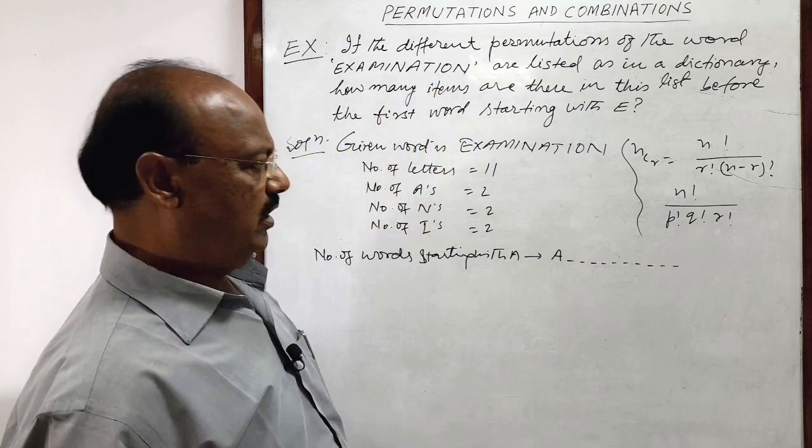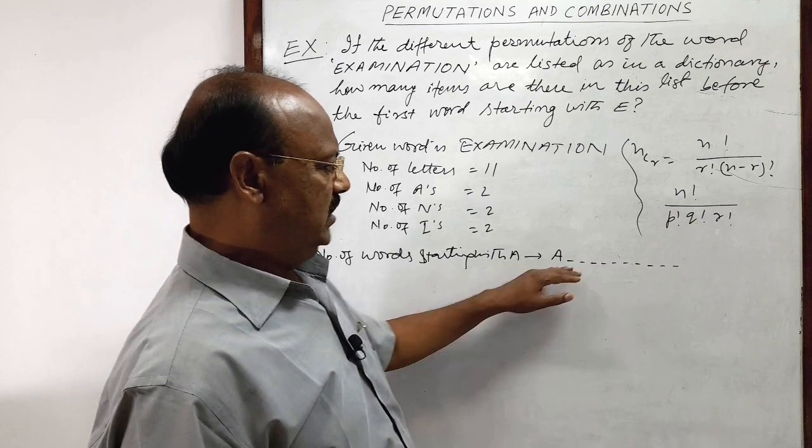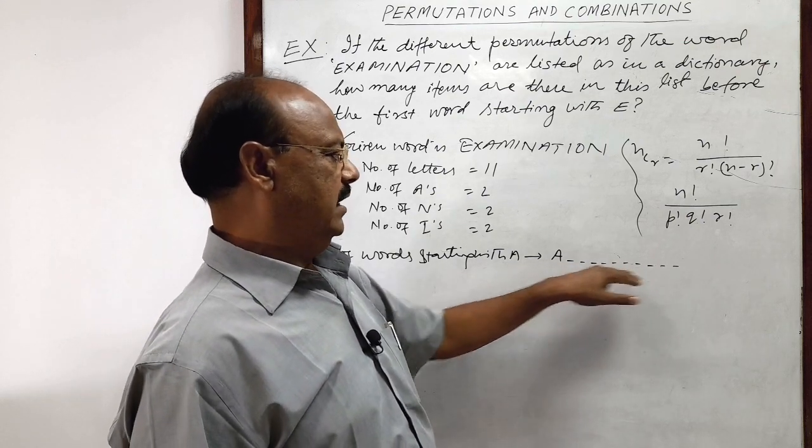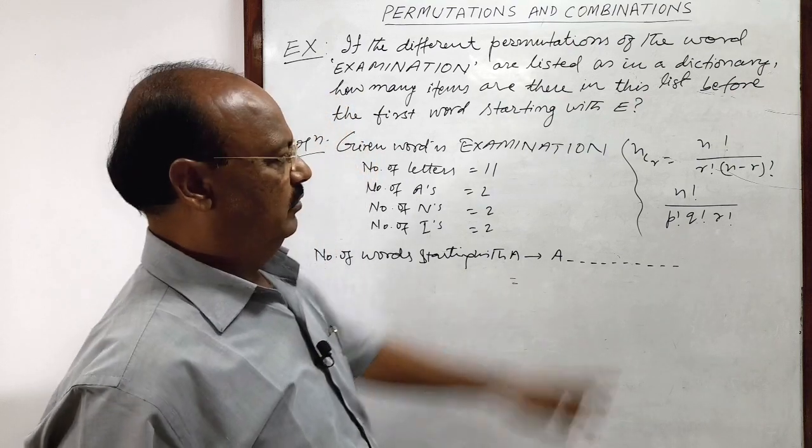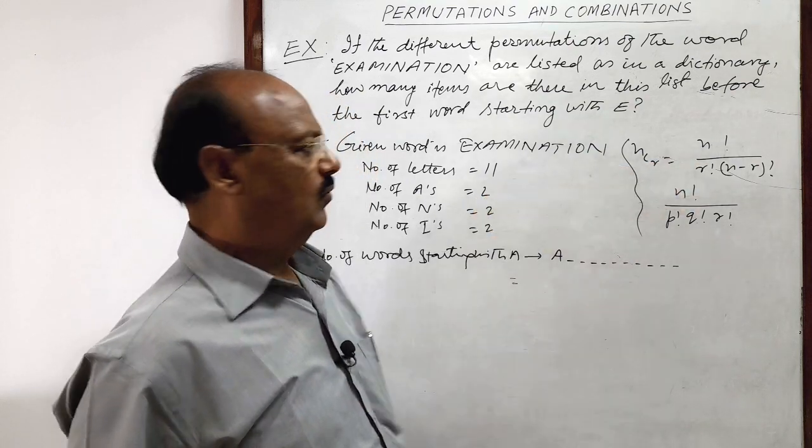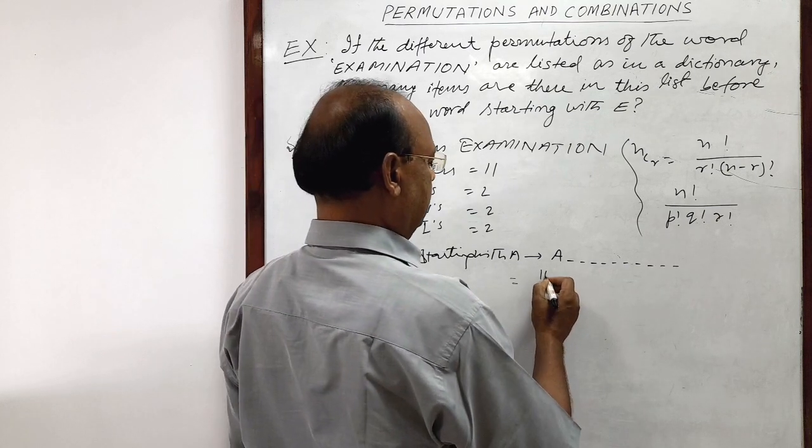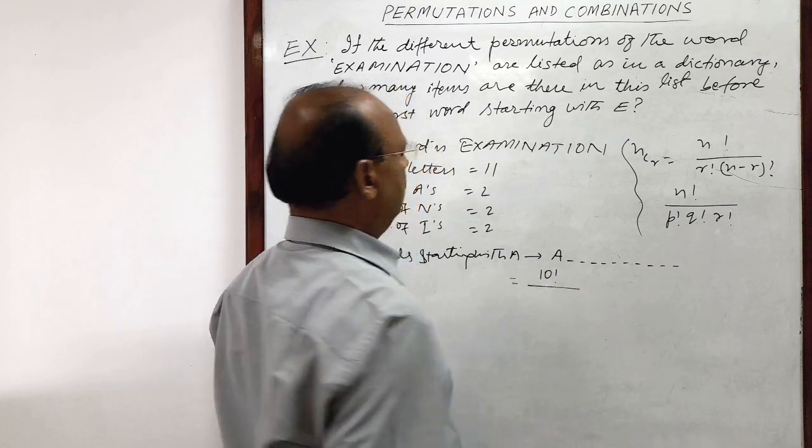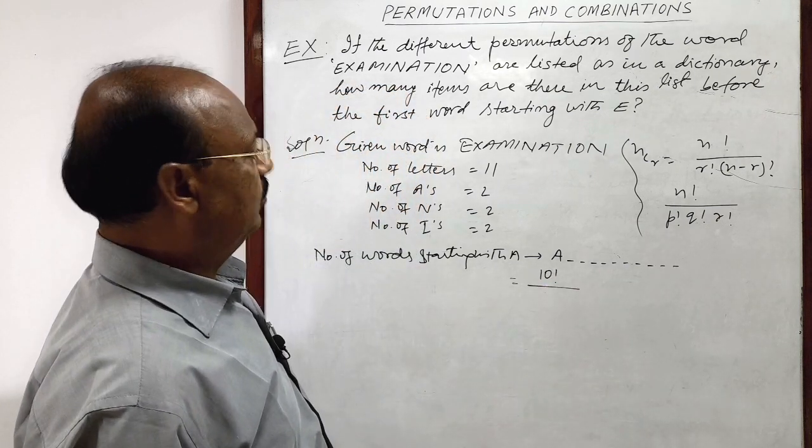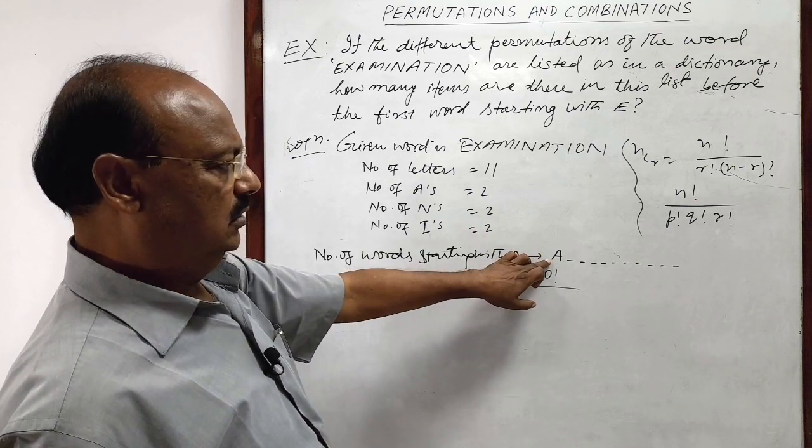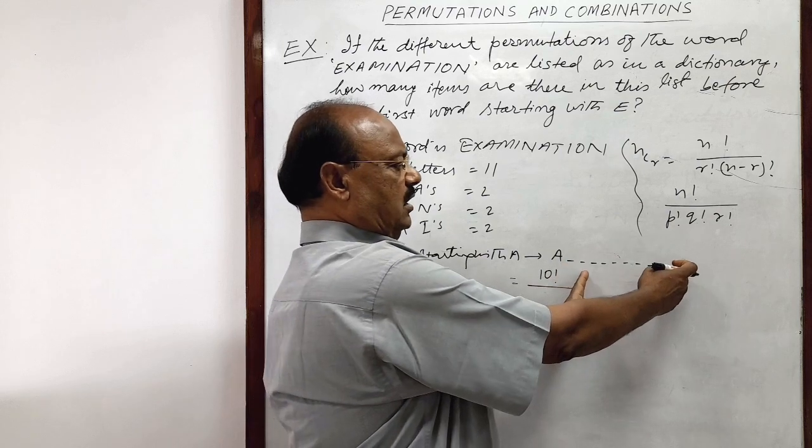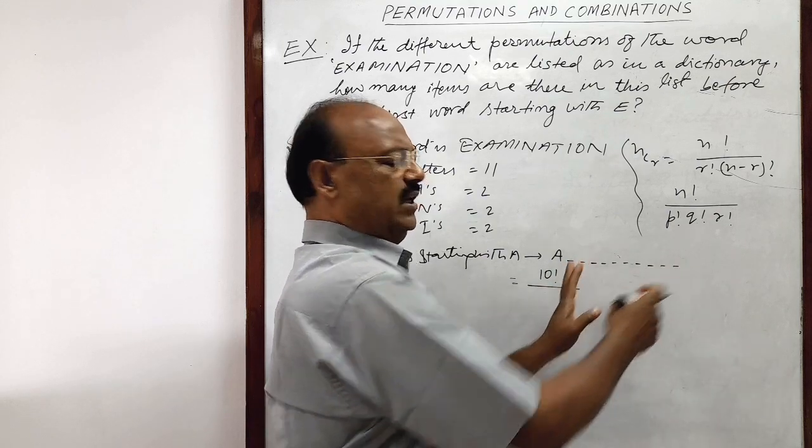Correct? So these 10 letters can be arranged in how many ways? We can use this formula here. So in numerator this will be 10 factorial and in denominator, 1 A is already used here. So out of these 10 letters, there is only 1 A.